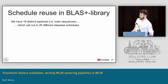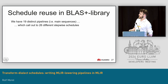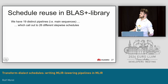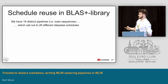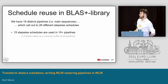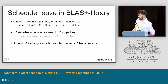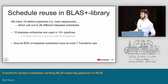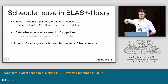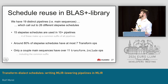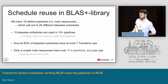To argue that reuse actually takes place: we use this compiler in support of a BLAS-like library. For this library, we have about 19 distinct pipelines which draw on 26 different smaller schedules. About 15 of those smaller schedules are used in more than 10 pipelines, so there is quite some reuse. Around 80% of the schedules have at most seven transform ops, so each sequence is relatively simple and easy to understand. The longest main sequence has a couple of ops over 11 transform ops, but not many.